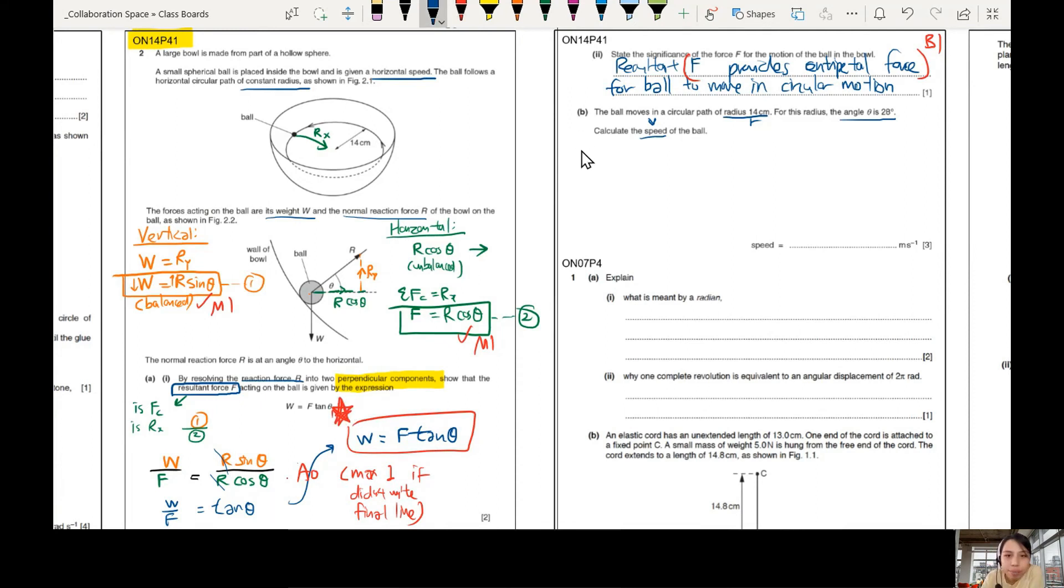Just start by writing the equation. Okay, write here. F_c equals to velocity V. So we just write here MV square over R.